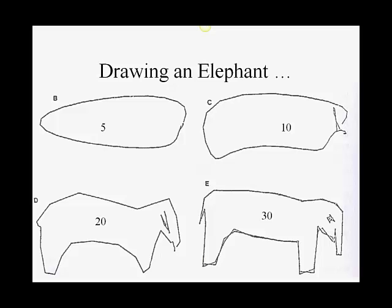So this is an indication of bias. As you increase the number of parameters, you reduce the bias between the model, the fitted model, and what's actually under there.